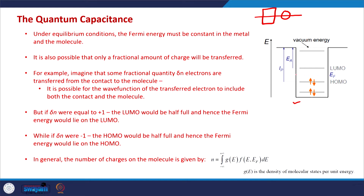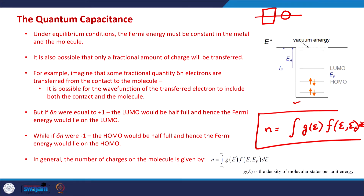At any point, the number of electrons can be given as the integration of the density of states times the Fermi function of the system. In equilibrium the Fermi function throughout the entire system will be the same; before equilibrium it might be different, leading to transfer of electrons from the contact to the quantum dot or vice versa. In nano systems generally the notion of Fermi level is not rigorously defined because the number of electrons is not so large, but it is defined via LUMO and HOMO energies and their occupancies.